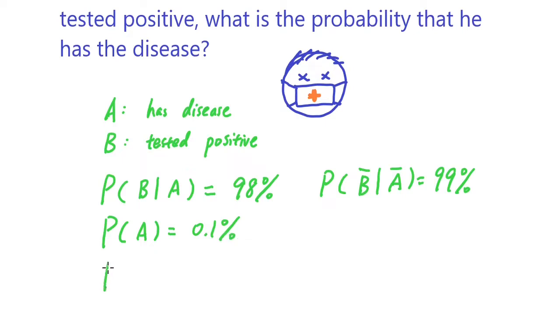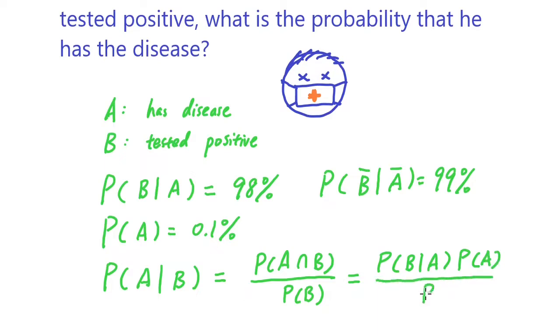The question is asking what is the probability that someone has the disease given that someone is tested positive. So probability of A given B is equal to probability of A and B divided by the probability of B. This is basically Bayes' rule that is written here.